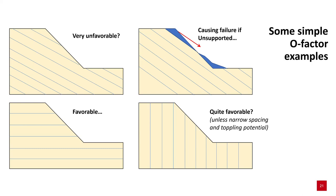Some visual descriptors of O-factor examples. Clockwise from the top left: very unfavourable bedding or foliation being undercut by the slope, causing failure if unsupported where the friction angle is low enough. Vertical or sub-vertical foliation can be quite favourable, unless it's narrowly spaced in weak material, in which there is toppling potential — in that case you would downgrade the O-factor further. And finally, horizontal strata is usually quite favourable.